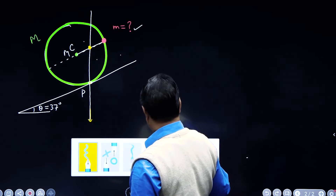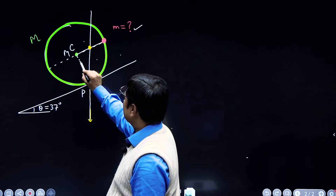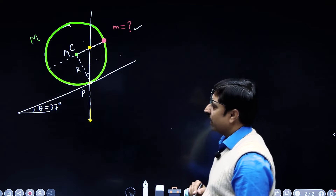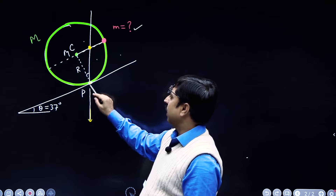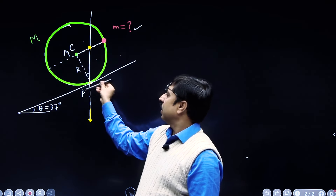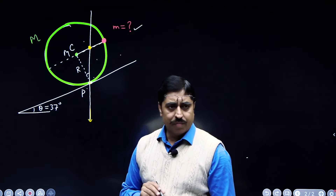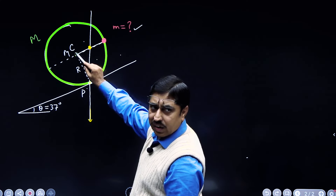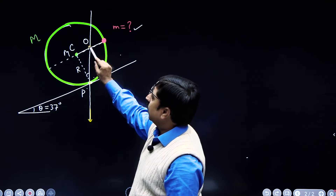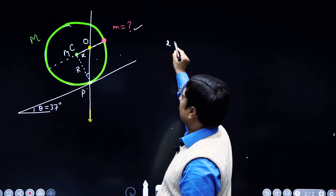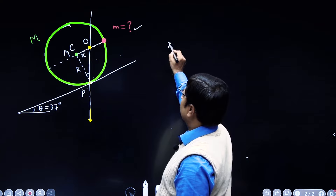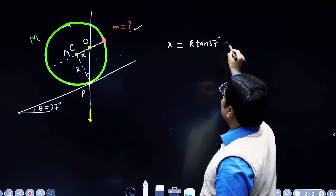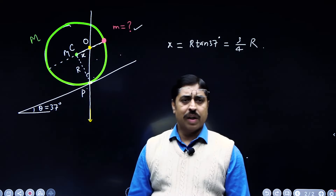Now we can simply work this out. This distance is the radius of the ring, and you can see that this angle will be 37 degrees. This angle is 37 degrees, this one is 53 degrees, and this is 37 degrees — because this is the radius, this is the tangent, 90 minus 53 gives 37. So in this triangle, if you look at the length x — where point C is the center of mass — then x over r equals tan 37 degrees. So x equals r·tan 37°, and tan 37° is approximately 3/4, so this length x is (3/4)r.